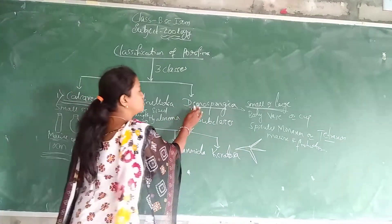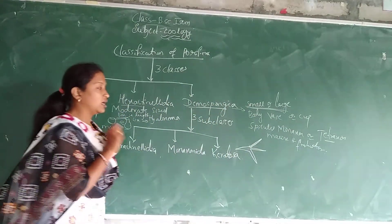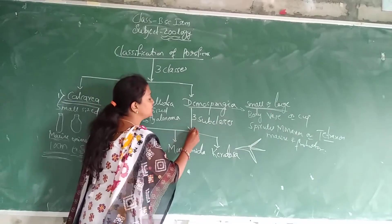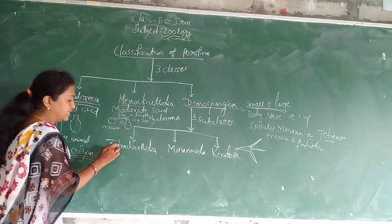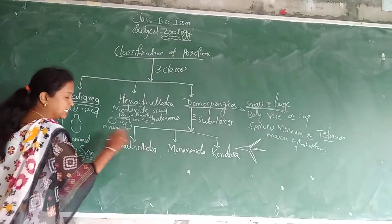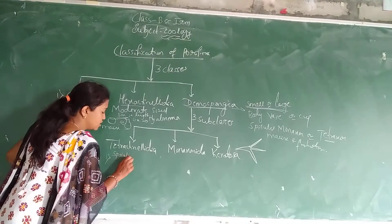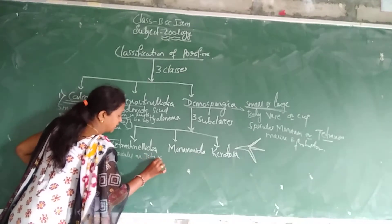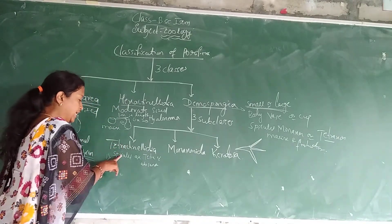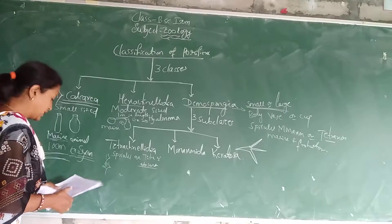Demospongia is divided into three subclasses. First is Tetractinellida. Characteristics: spicules are tetraxone or may be absent. Body is flattened or rounded in structure. These are dull light colored animals and mostly shallow water animals. The example is Chondrilla.